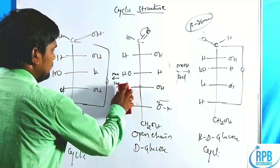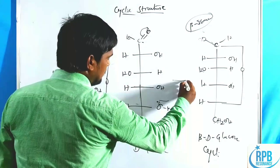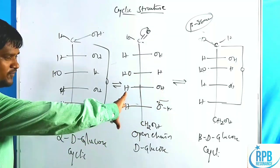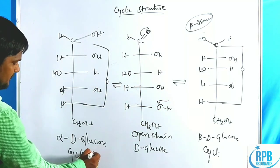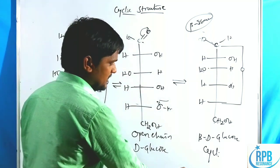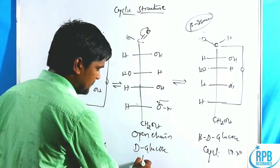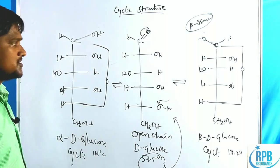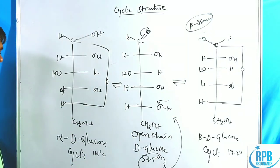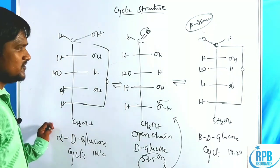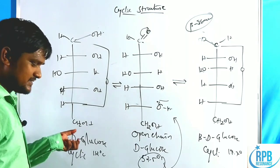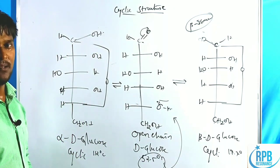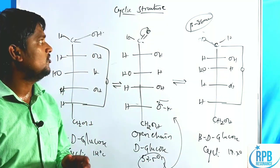These two cyclic compounds — alpha and beta D-glucopyranose — show mutarotation. The alpha isomer has a specific rotation of +112 degrees and the beta isomer has +19.7 degrees. In aqueous solution, both equilibrate to +52.5 degrees, which is the mutarotation value of glucose. In the next video, I will explain the cyclic structure confirmation, Fischer projection representation, and which of the two alpha and beta isomers is more stable. Thank you for watching.